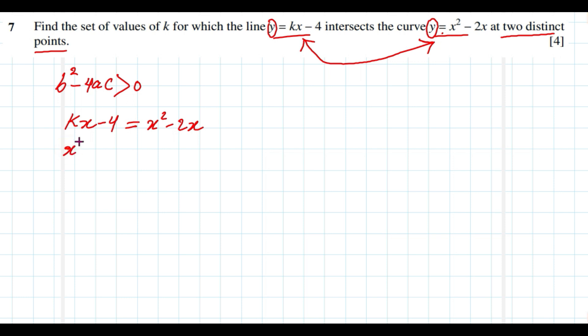Then we arrange this to get the final quadratic equation. You can send these two terms to the right side: negative kx then plus 4 equals zero. Or you can say x squared minus, the two terms that include x is negative 2x with negative kx. You can take out negative x as the common factor, then 2 plus k will remain here, and plus 4 equals zero.